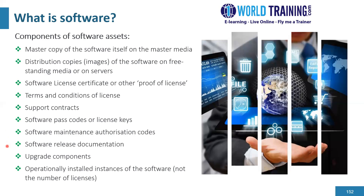Then we have the software release documentation to provide clarity on the version numbers of the various software releases. The upgrade components which come with upgrades, such as files, and a list of files or a bill of materials. And last but not the least, operationally installed licenses or instances of the software — these are not the actual number of licenses purchased, but the number which have been installed.